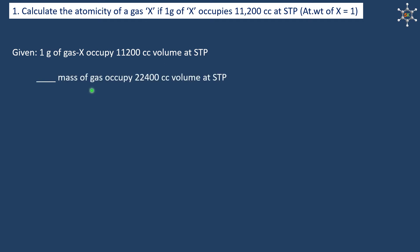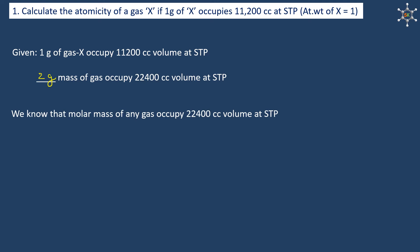We can calculate the mass of gas X occupying 22400 cc volume at STP. If we cross multiply, we get 2 grams. We know that the molar mass of any gas occupies 22400 cc volume at STP. Combining these points gives us the molar mass of gas X as 2 grams.